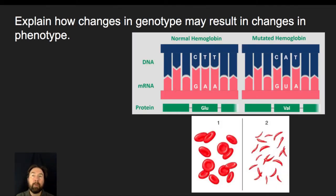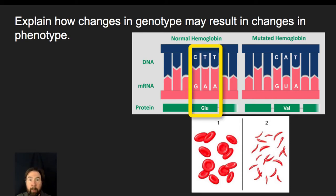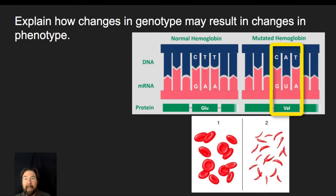How can changes in genotype result in changes in phenotype? The DNA sequence provides the template we use to make mRNA through transcription. If the DNA sequence has changed, we make a different mRNA, and when that mRNA goes to the ribosome, we bring in a different amino acid as part of our protein. We can see this in the formation of normal hemoglobin versus sickle cell hemoglobin. In normal hemoglobin, the sequence CTT on DNA leads to an mRNA that codes for glutamic acid, but a change to CAT on DNA produces GUA on mRNA, which leads to the production of valine instead.